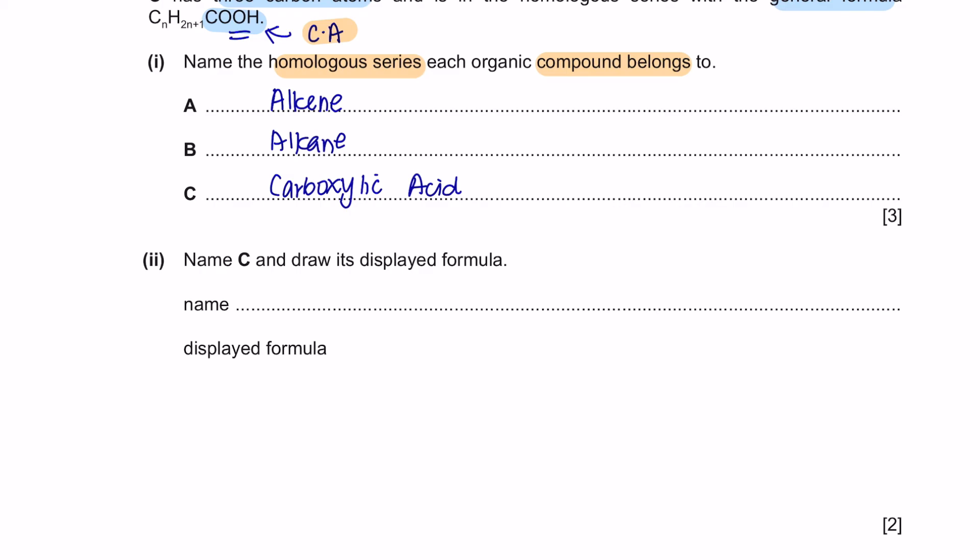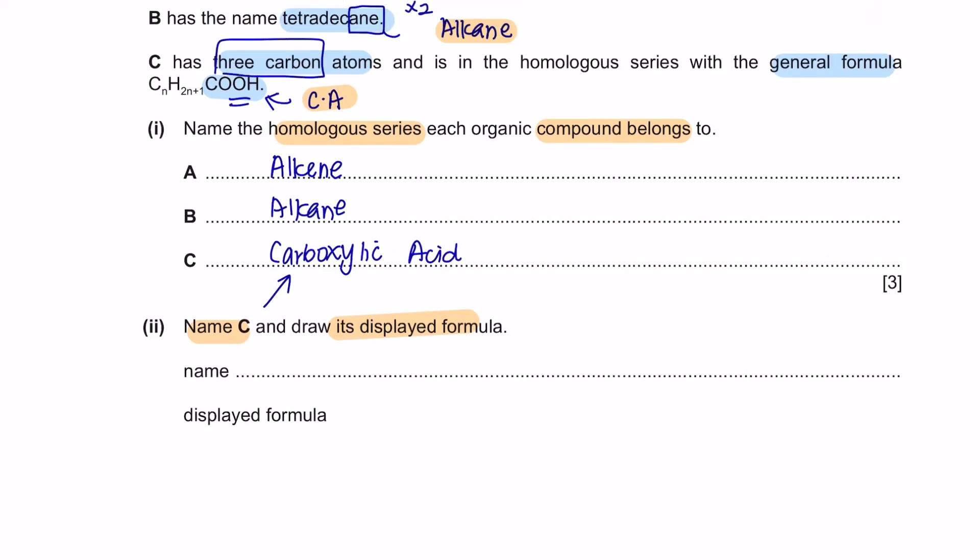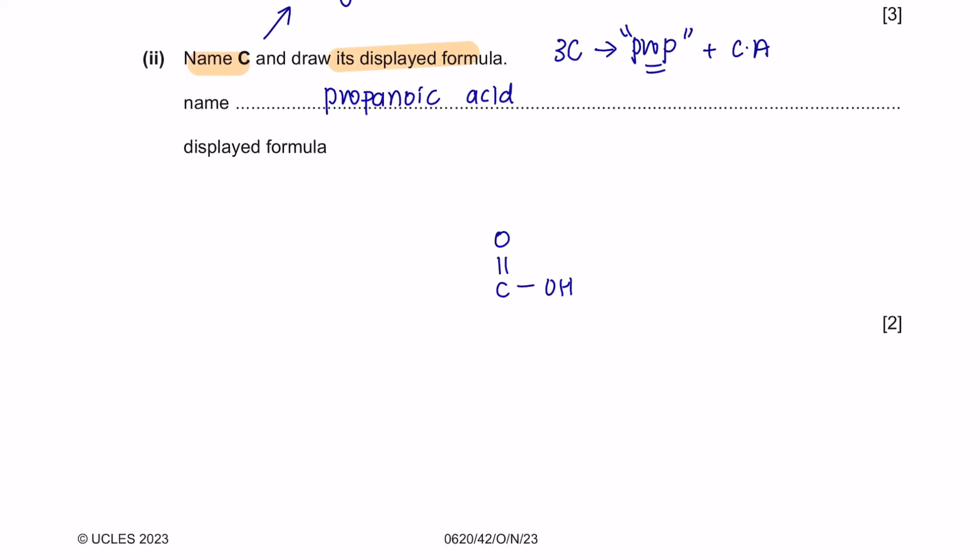Next question part 2. Name C and draw its displayed formula. C is a carboxylic acid which has three carbon atoms. Three carbon atoms means the name should start with 'prop'. This is a carboxylic acid, so we are going to add 'prop' into it to become propanoic acid. Now we are going to draw the displayed formula. For carboxylic acid, I like to start by drawing the functional group which is COOH like this. We know that it has three carbons and there's already one carbon over here. So we are left to draw another two carbons. And each carbon has to be filled up with hydrogen atoms.